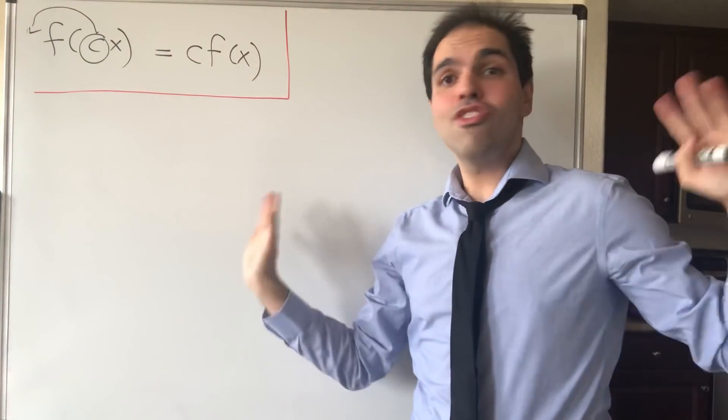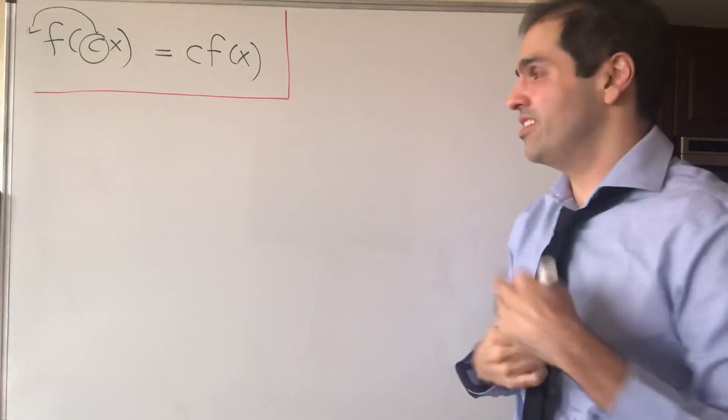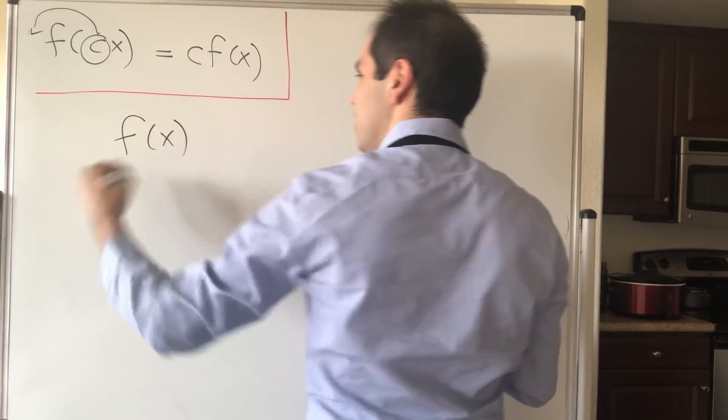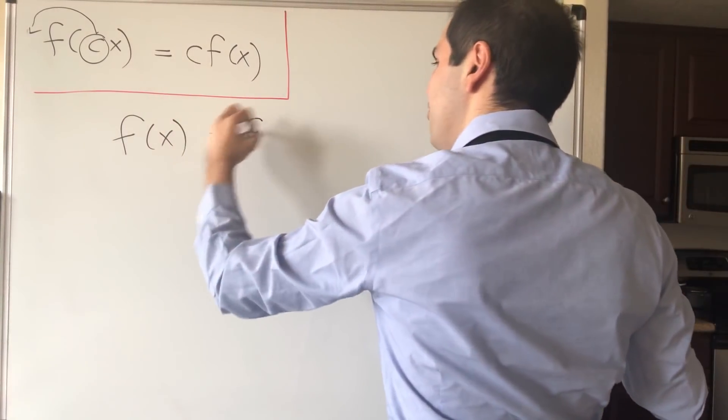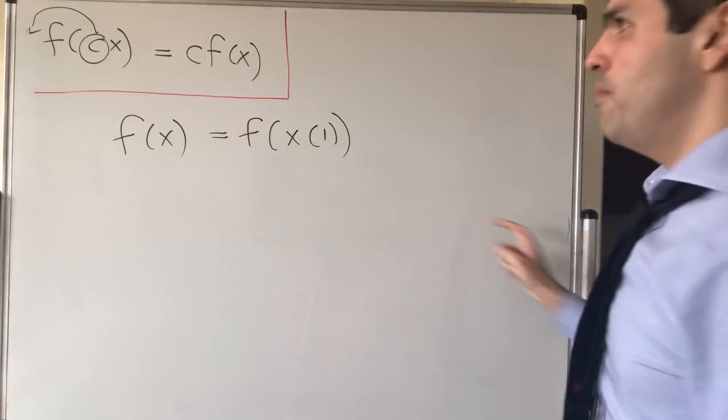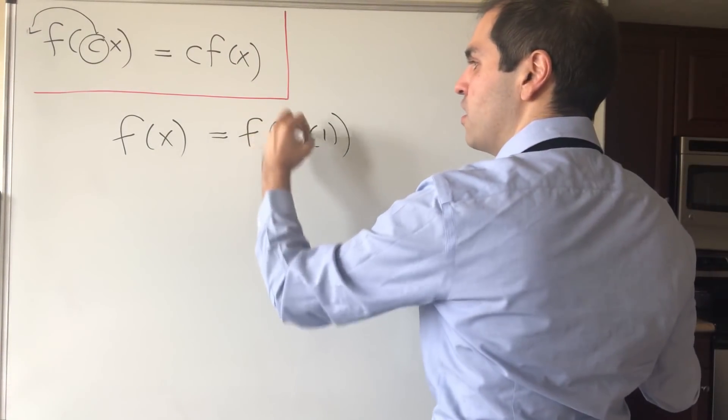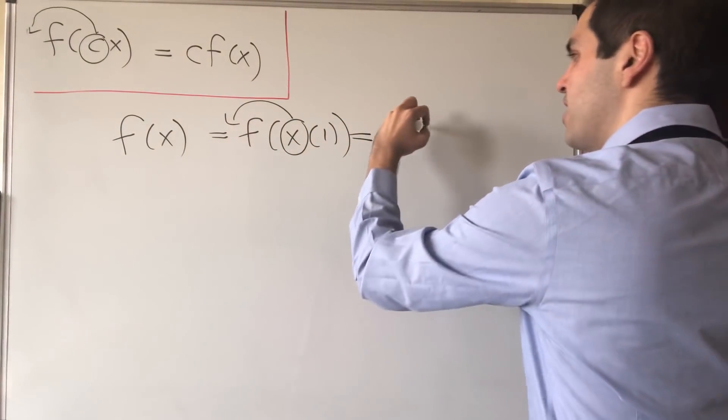For the case for functions from R to R, this is actually super easily solved, because notice it's based on this clever trick. Consider f of x. This is the same thing as f of x times 1. And because it's multiplicative like that, we can just pull out the constant, which is x, and this becomes x times f of 1.